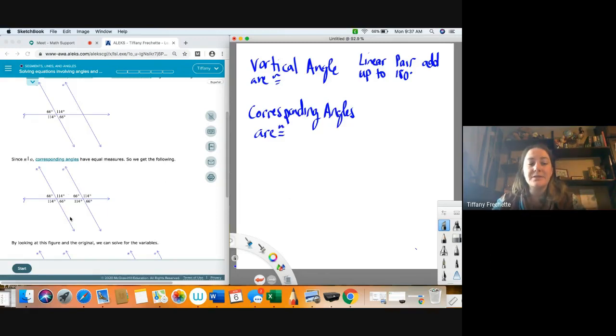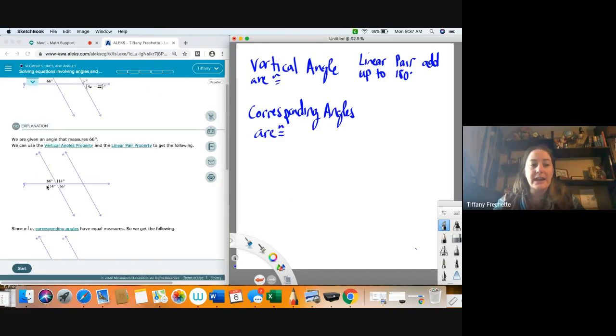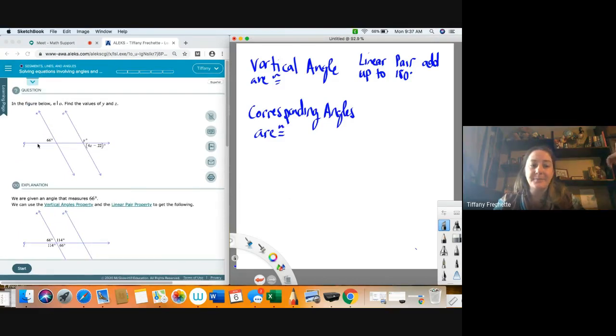So a corresponding angle is in the same position when we're talking about the parallel lines and we're talking about the transversal. So let's look at this 66 here. So it is on top of this transversal L, and transversal just means that it's a line going across the other two. So we have, it's on top of the transversal, and it's also to the left side of its parallel line.